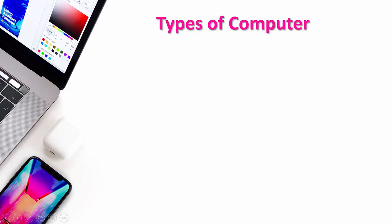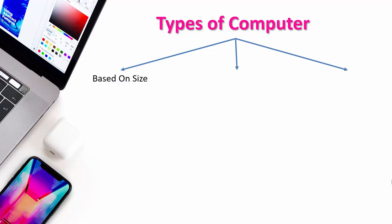We can classify computers, or say classification of computers, into three different types. The first type is based on size, the second type is based on mechanism or technology used, and the third type is based on purpose.